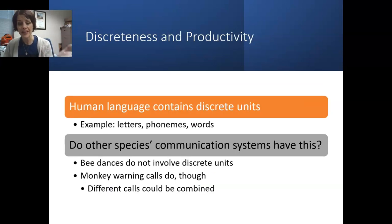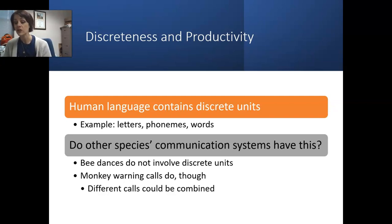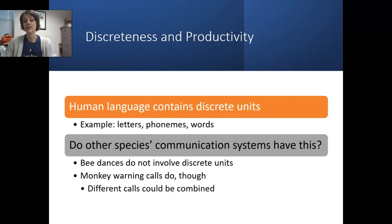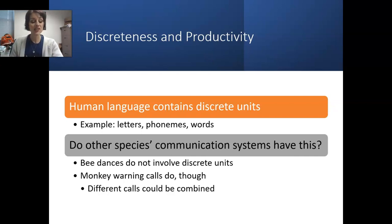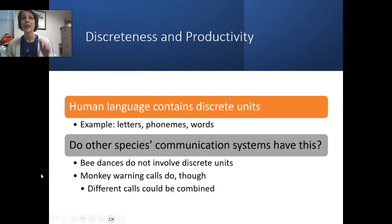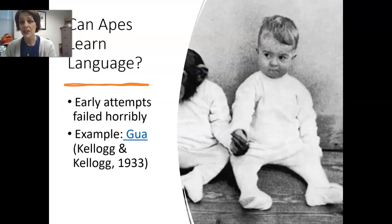Human language contains discrete units — letters, phonemes, words. Bee waggle dances do not have discrete units, but monkey warning calls do — you can combine different types of calls to respond to multiple predators. All of this is to say that while some species have communication systems that look very much like language, none of them really meet all three criteria to qualify as language.